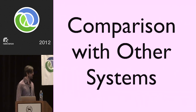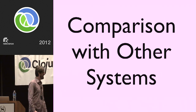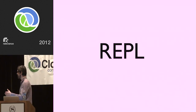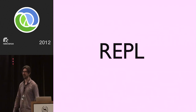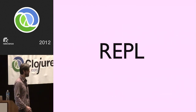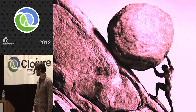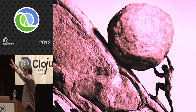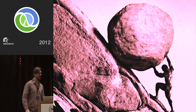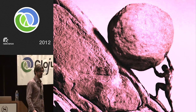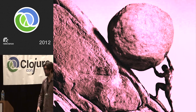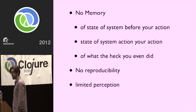So let me unload the full clip about the REPL. The basic characteristic of the REPL: it's like Sisyphus rolling the boulder up the hill. You're rolling the state up the hill, close the window and poof — all the work is gone, condemned to a lifetime of copying and pasting things into the REPL or re-evaluating stuff. There's no memory — no memory of the state of the system before you did what you did, no memory of the state after, no memory of what you even did. So there's no reproducibility.